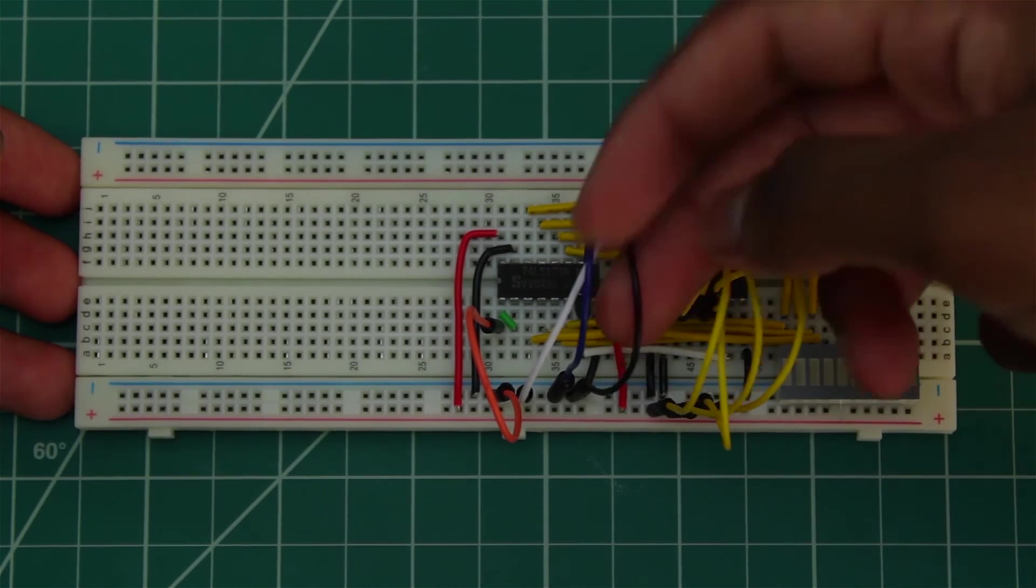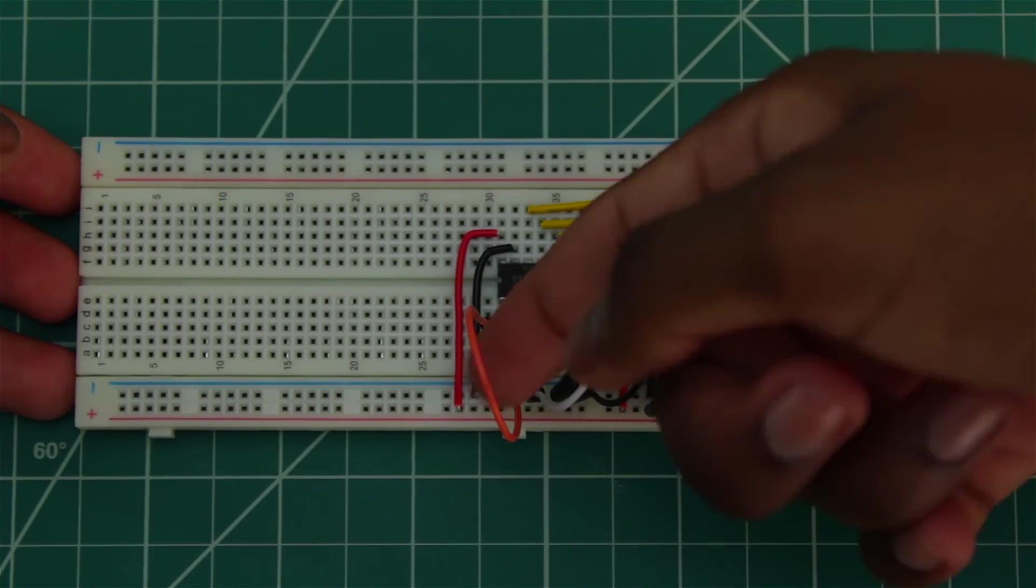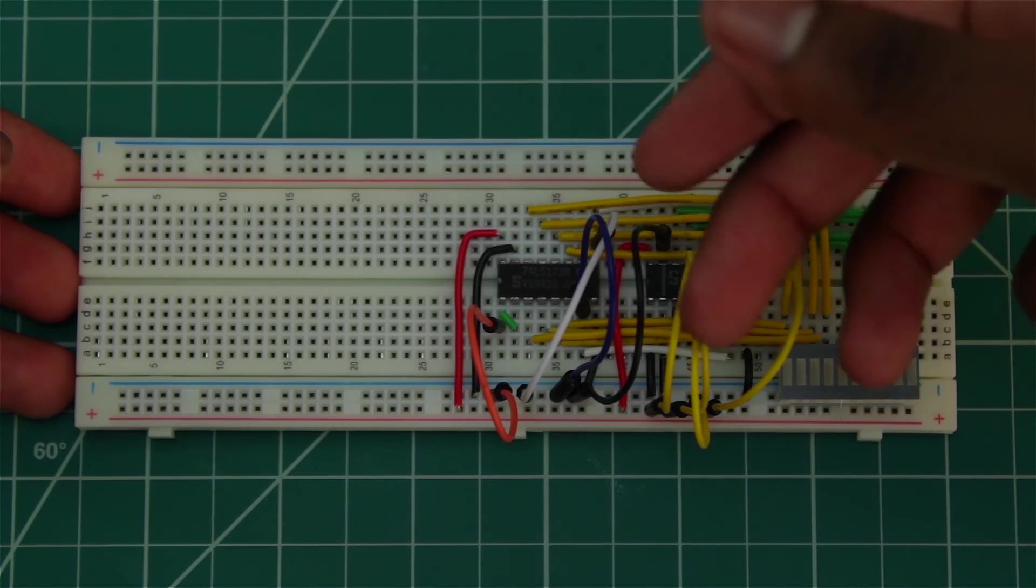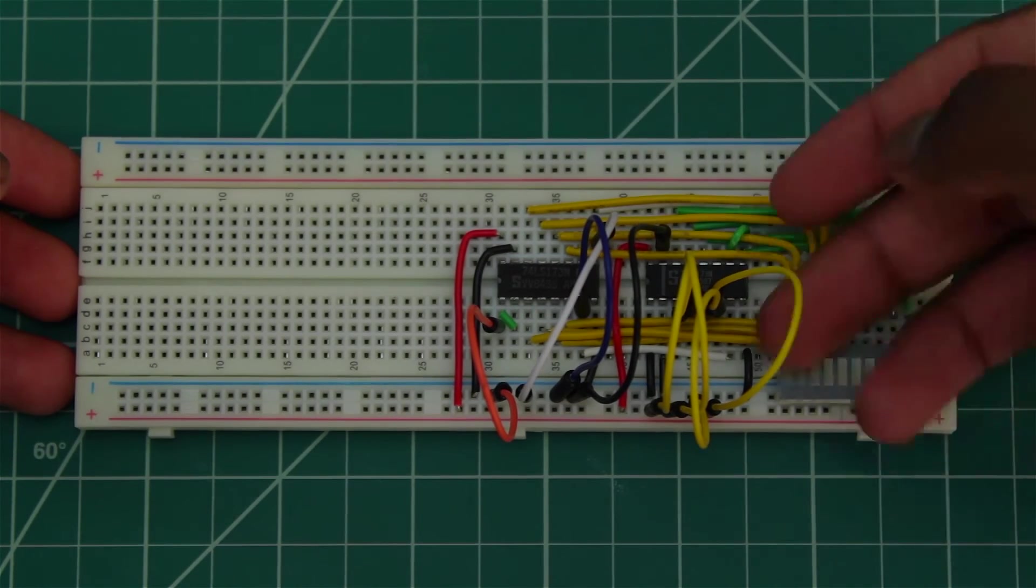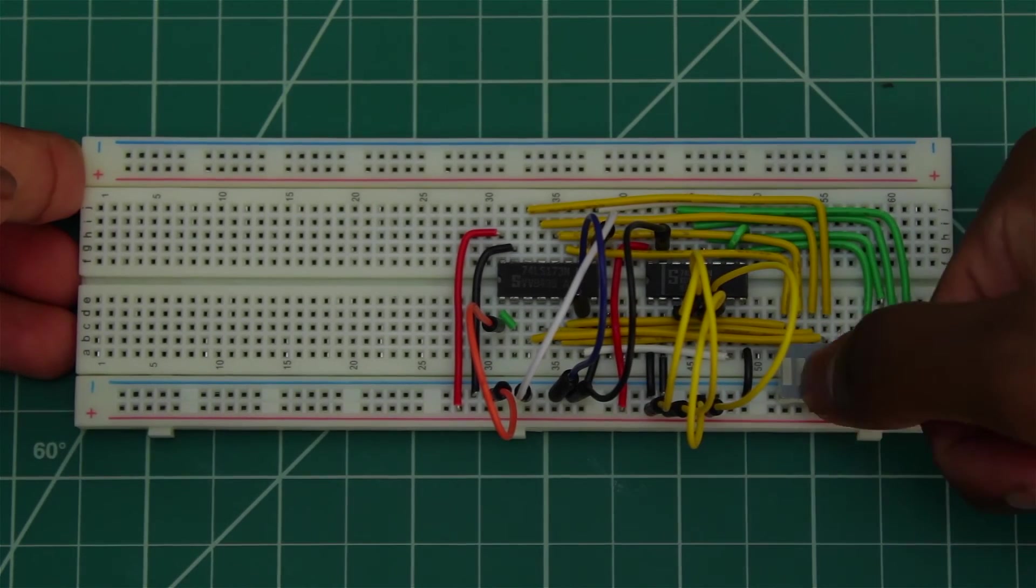The blue line is the clock for both registers. The white wire is our load enable line for both registers. The orange wire is the push enable line for the memory address register because remember, the instruction register has its push enable line always tied low. This LED array is going to tell us what is on the bus.